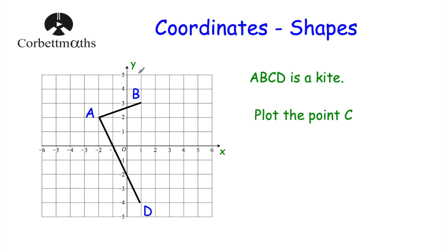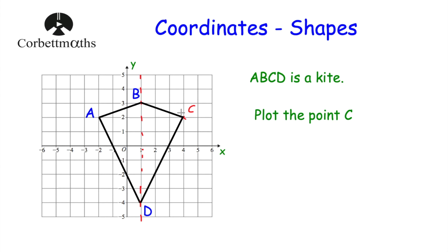If it's got a line of symmetry, the line of symmetry would be down here. So that means that if A is over here somewhere, C would have to be over here somewhere. The line of symmetry would be down here, and if the point A is 3 to the left of the line of symmetry, the point C would be 3 to the right of the line of symmetry. So the point C would have to be over there. We've plotted it — it's the point 4, 2. Let's just complete the kite by joining B to C and from C to D, and as you can see, A, B, C, D is a kite.